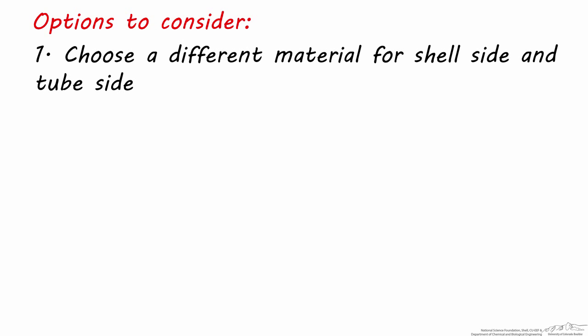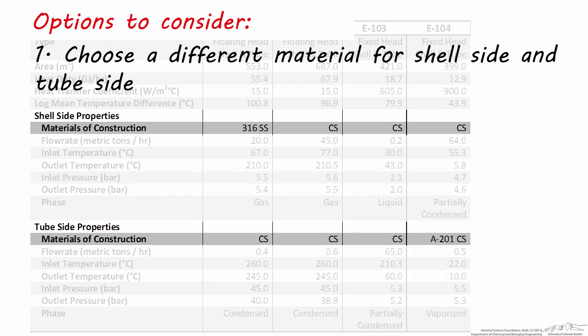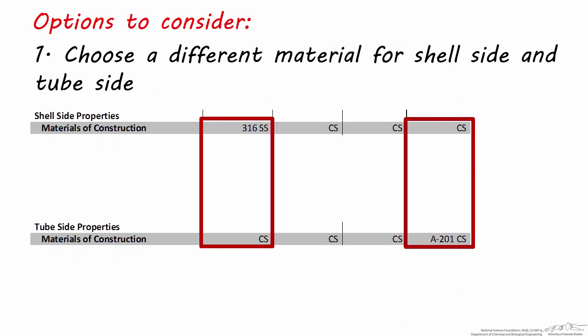For heat exchangers, there are two additional options you should consider to help lower cost. First, know that with heat exchangers, the tube-side materials of construction can differ from the shell-side materials of construction. One of the first things you might notice about this equipment summary table is that some of these shell and tube materials are not identical.